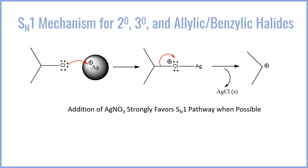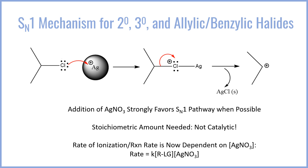The addition of silver nitrate to a mixture of halides strongly favors the SN1 process when favorable. It is worth noting that in order for this to work, you need a stoichiometric amount of silver nitrate. This is not a catalyst — you're actually precipitating out all of the silver used in a one-to-one ratio whenever you react it with the halide. As a result, the rate of ionization or the rate of the SN1 reaction is now dependent on how much silver ion you actually have. So the rate is not just K times the leaving group concentration; it is also dependent on the concentration of silver nitrate, since that is what's affecting the ionization.